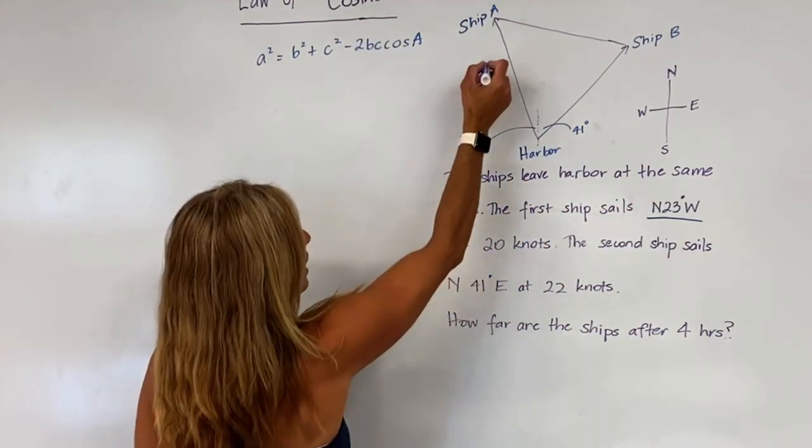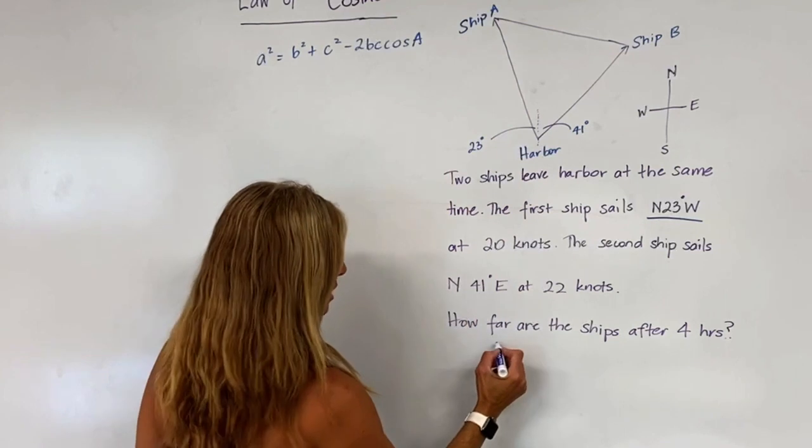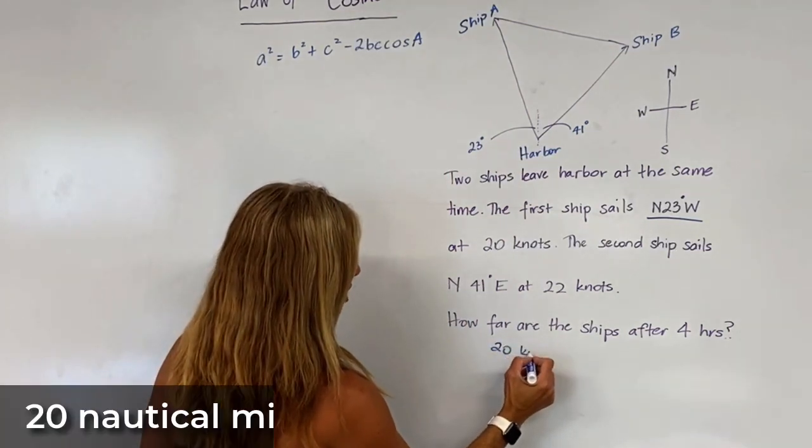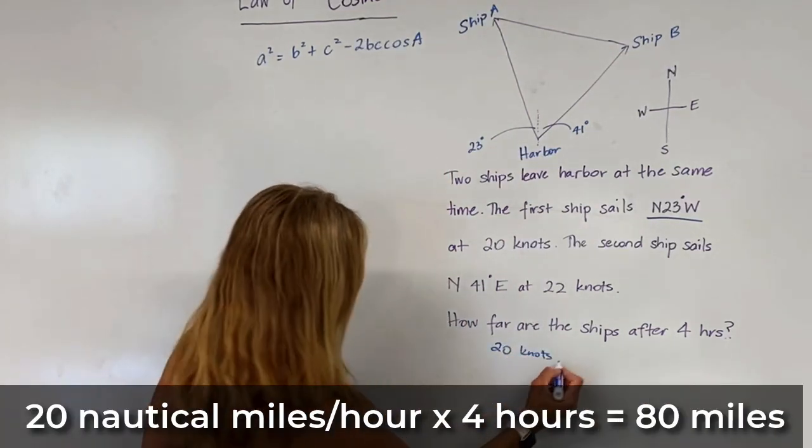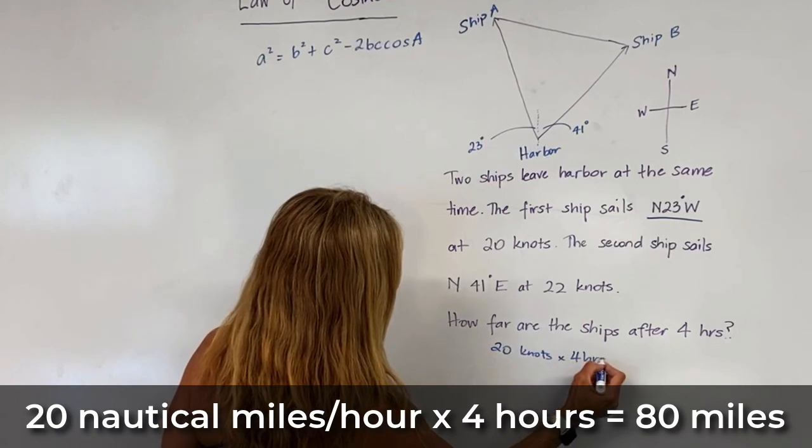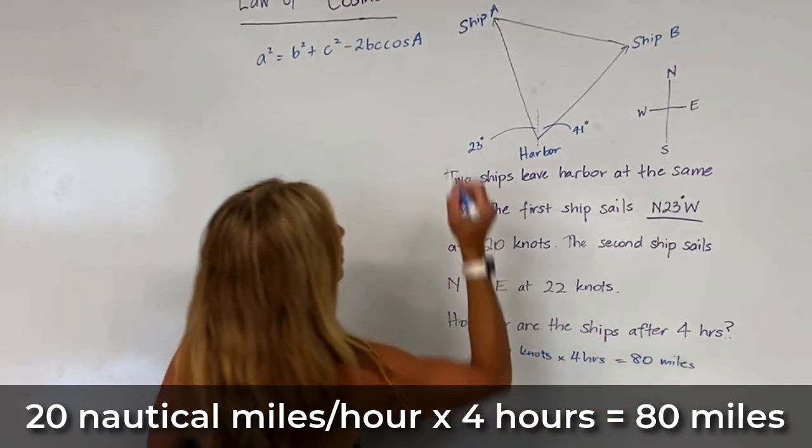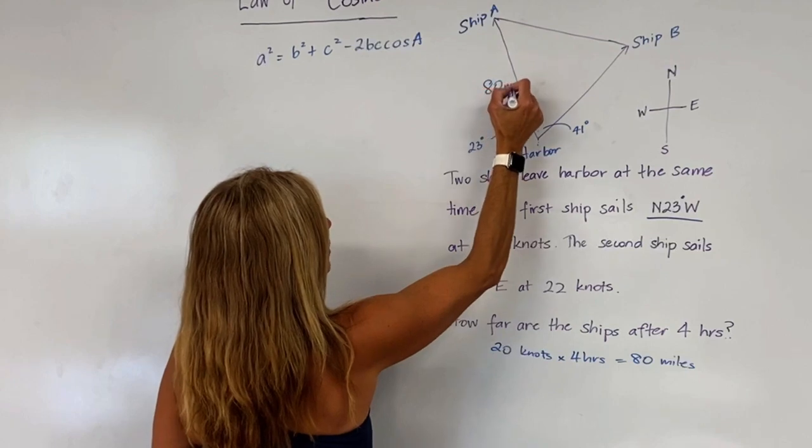Ship A has traveled, let's see, 20 knots or nautical miles times four hours—that would be 80 miles. So ship A has traveled 80 miles.